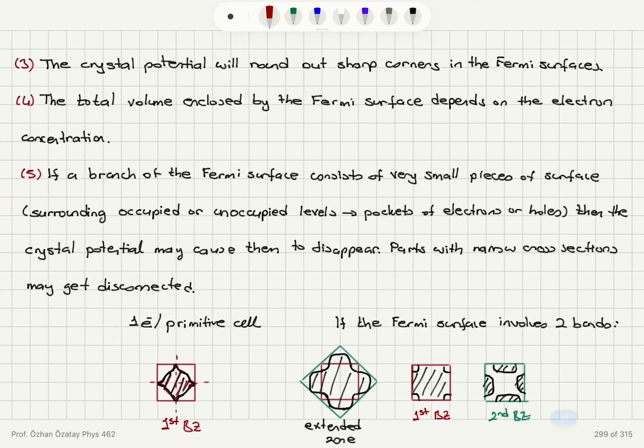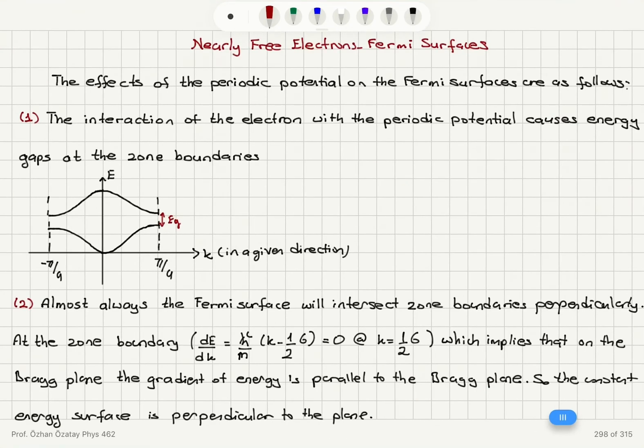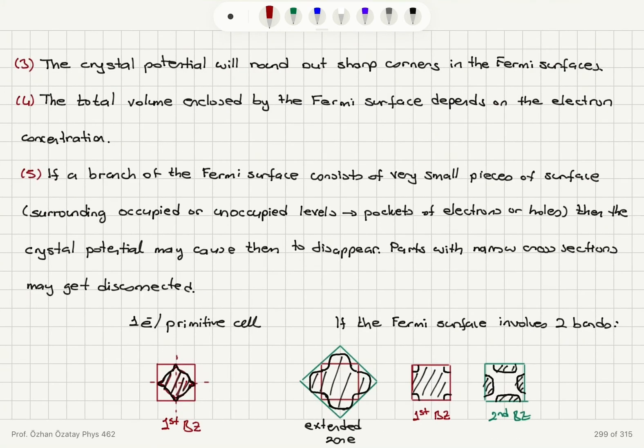So in summary, we talked about the modifications to the Fermi surface, the Fermi sphere, in the case of block electrons. So we need to have energy band gaps. The Fermi surface will intersect the zone boundaries perpendicularly. There are no sharp corners. The total volume enclosed by the surface depends on the concentration. Small pieces of pockets, small pockets of holes or electrons may disappear in the nearly free electron picture.